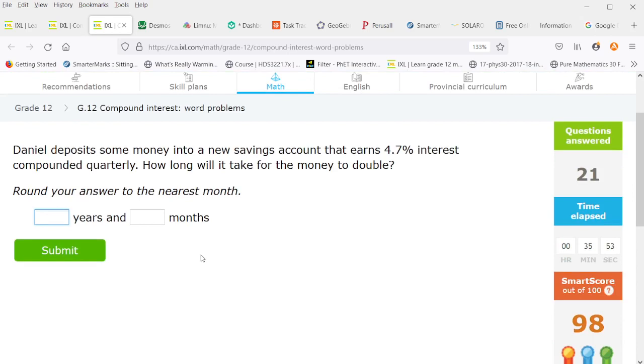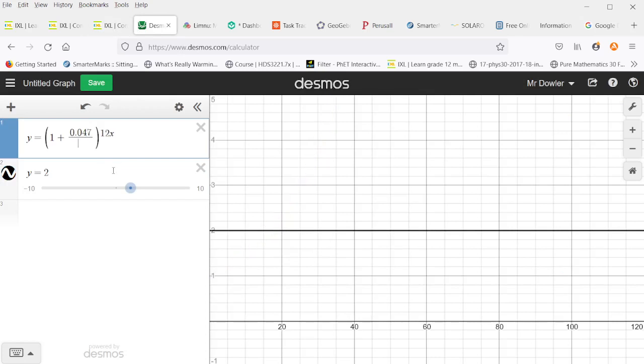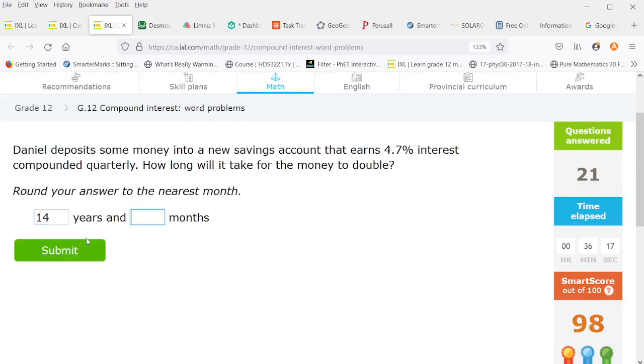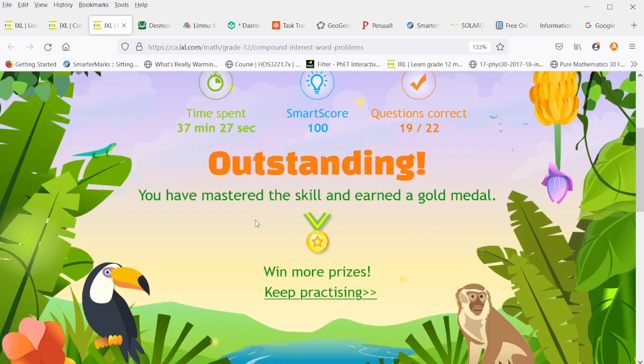Now Daniel deposits some money into a new savings account, earns 4.7 percent interest compounded quarterly. How long will it take his money to double? Well this is now instead of 4.47 it's 4.7. He's compounding quarterly. So his money doubles in 14.834 years. So 14 and the 0.834 times 12 is 10 months. And there we go, finally.